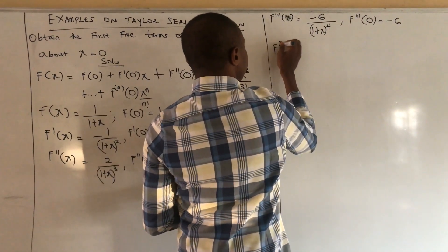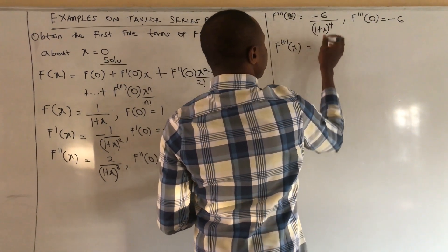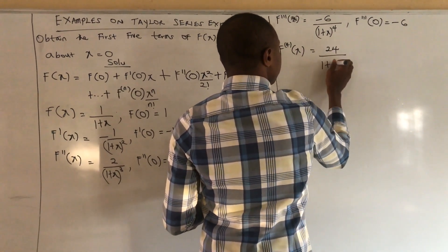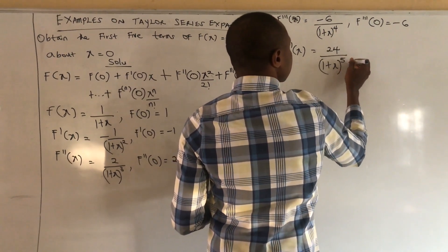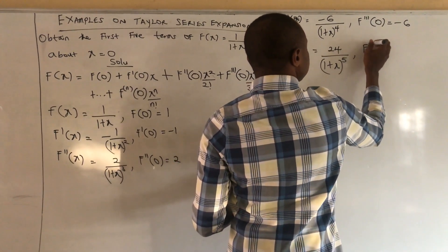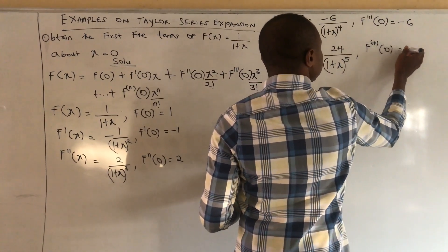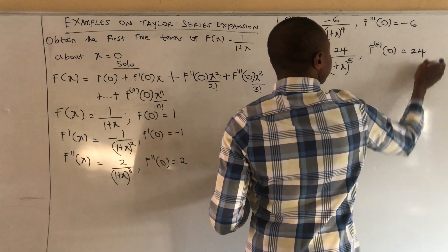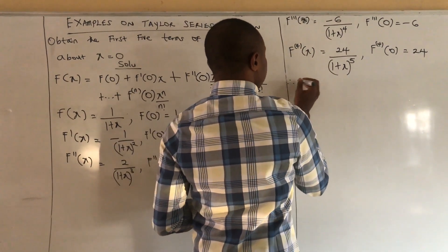For the fourth derivative, at x equal to 0, if we substitute 0 for x we will have positive 24.